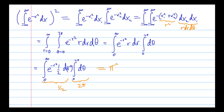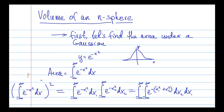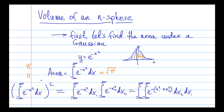And so we go back and say that since the square of what we want to find is π, then the answer to the integral of the Gaussian is the square root of π. And this is a well-known result.